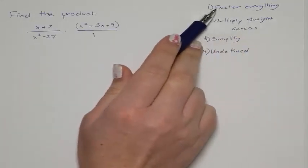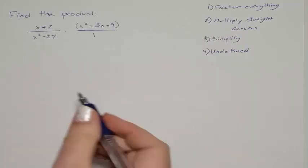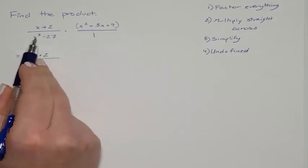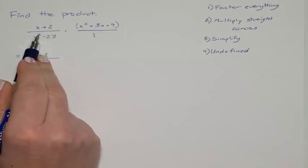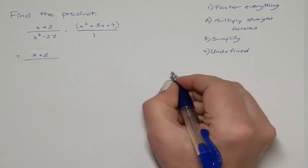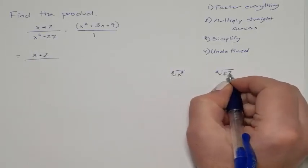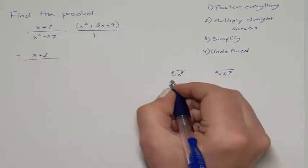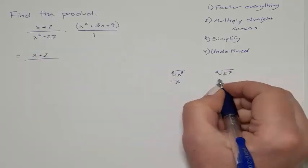The very first step is that we need to factor everything. The numerator, x plus 2, cannot be factored — there is no GCF, so it stays as x plus 2. The denominator is a difference of cubes because we can take the cube root of x³ and the cube root of 27. The cube root of x³ is x, and the cube root of 27 is 3.